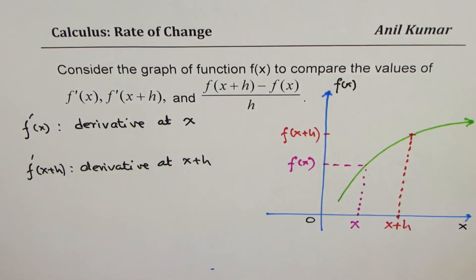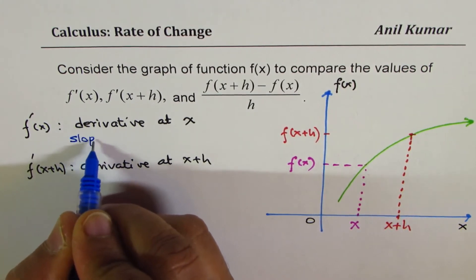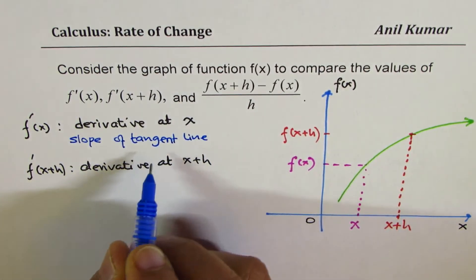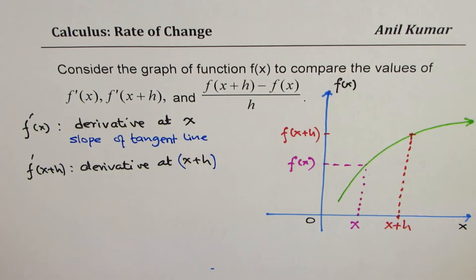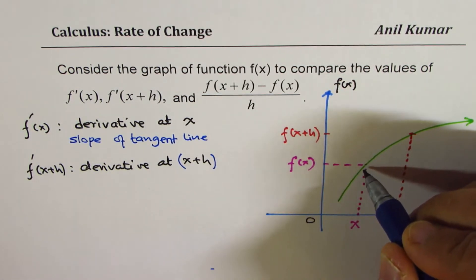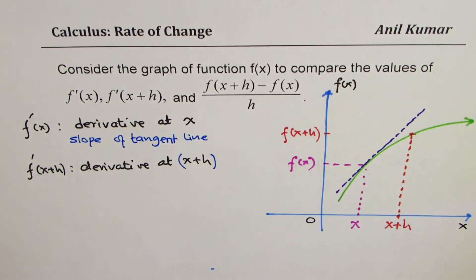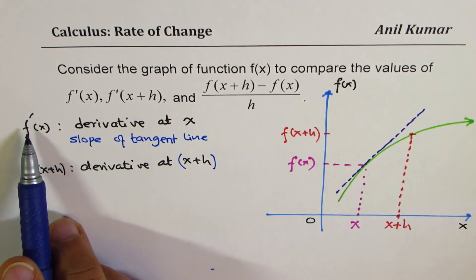Now when we say derivative, it really means what? It means slope of tangent line at that point. So derivative means slope of tangent line, that is what it means at x. Here also it means the same thing at x plus h. So we can approximate the value by sketching a slope at these points. Let me just sketch a slope at x. It will look something like this. So that gives you an idea of the gradient of this particular slope. And that's the value corresponding to derivative of the function at x.